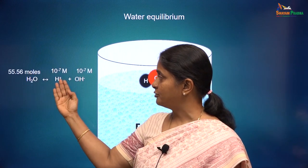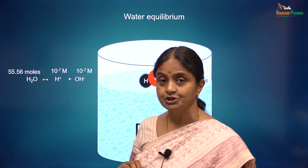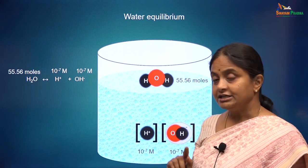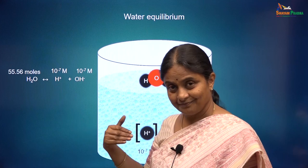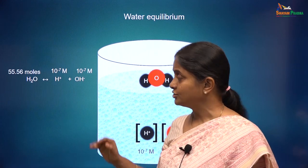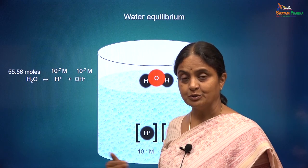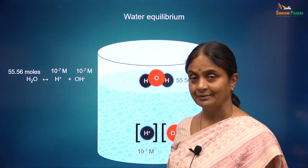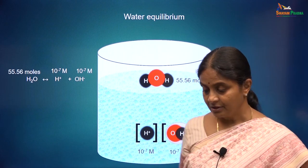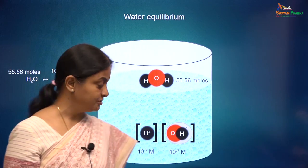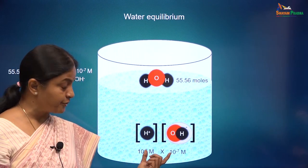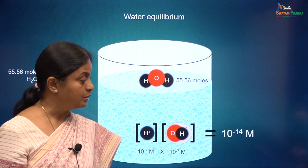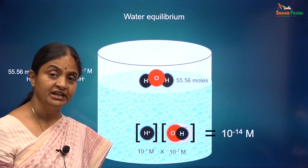At equilibrium, we have 55.56 moles of stable water molecules in equilibrium with 100 nanomoles each of hydrogen and hydroxyl ions. Addition of acid — which yields more free hydrogen ions — to a liter of water will disturb the water equilibrium. At equilibrium, the rule of chemistry is that the product of the concentrations of hydrogen ions and hydroxyl ions must equal 10 to the power minus 14 molar.